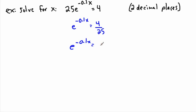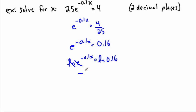Now I want to get rid of the e, so I take the natural log of both sides: natural log of e to the minus 0.1x equals natural log of 0.16. These undo each other, so now I have minus 0.1x equals ln of 0.16. To get x by itself, I divide both sides by negative 0.1.